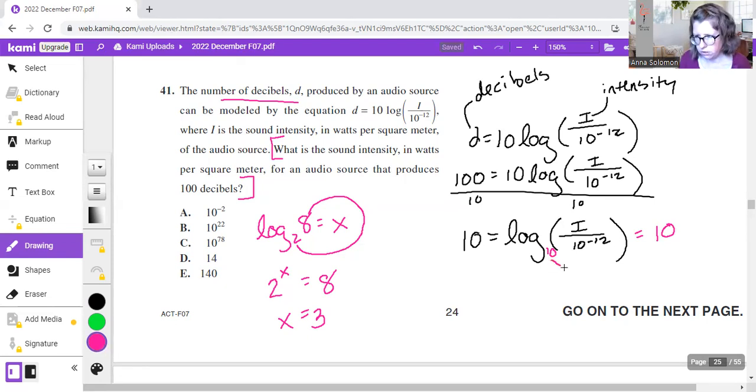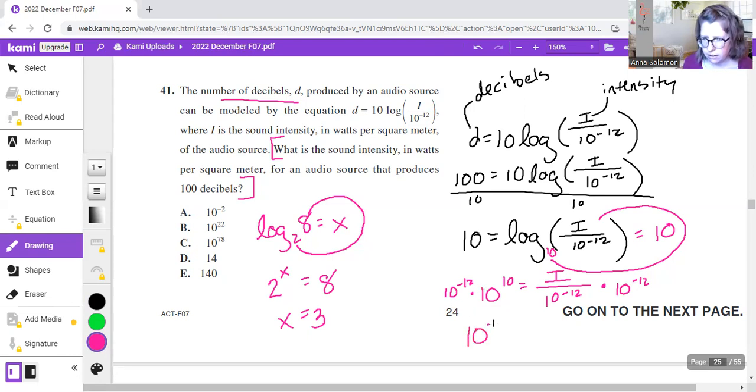So that means I am now going to do my curly Q, go all the way around, and I've got 10 to the 10 equals i over 10 to the negative 12. I need to solve for i, so I'm going to go ahead and multiply both sides by the denominator, 10 to the negative 12, and then when we multiply numbers with the same base, the 10 and the 10, the exponents add together, so we will get 10 to the negative 2 equals i. Double check that that's what they asked for, sound intensity, yes, indeed, and so there is my answer.